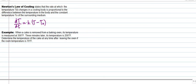To illustrate Newton's Law of Cooling, consider this example: when a cake is removed from a baking oven, its temperature is measured at 300 degrees Fahrenheit. Three minutes later, its temperature is 200 degrees Fahrenheit. Determine the temperature of the cake at any time after leaving the oven, given that the room temperature is 70 degrees Fahrenheit.